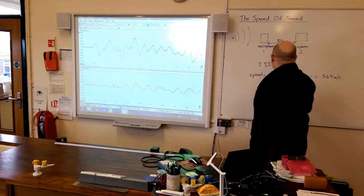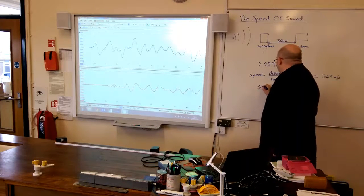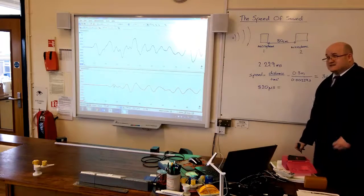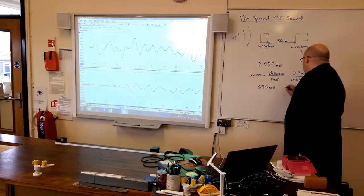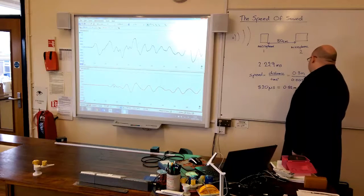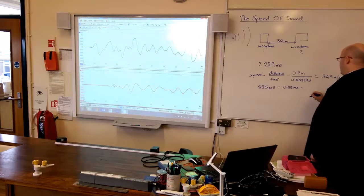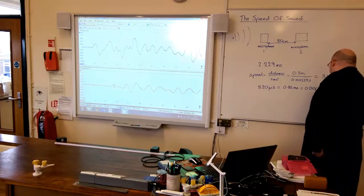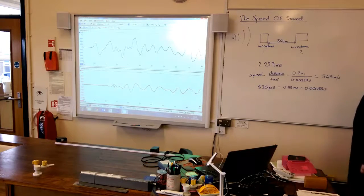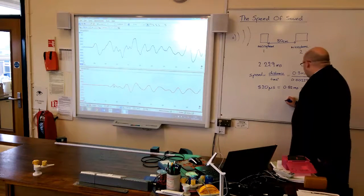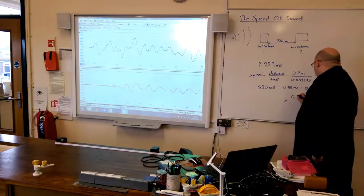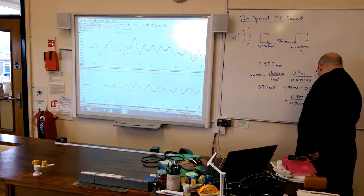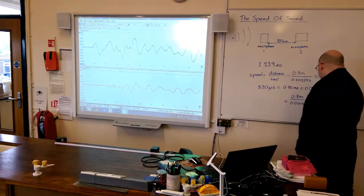OK. So, for the table, it was 820 microseconds. And microseconds is a millionth of a second. So, that would be... that's 0.82 milliseconds, which is 0.00082 seconds. Right. So, now I have to do that sum again. So, it was 0.8 meters again divided by 0.00082 seconds.